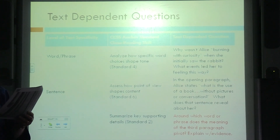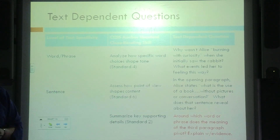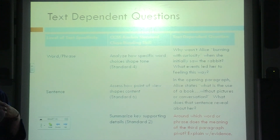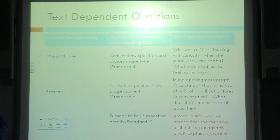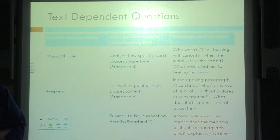If you'll flip back over to your Alice in Wonderland passage, look at paragraph three. If you have table partners, you can discuss. Really think about what word or phrase does the meaning of that paragraph shift or pivot on. Around which word or phrase does the meaning of the third paragraph pivot? When you find it, circle it. Then go through and underline evidence that supports your thinking.